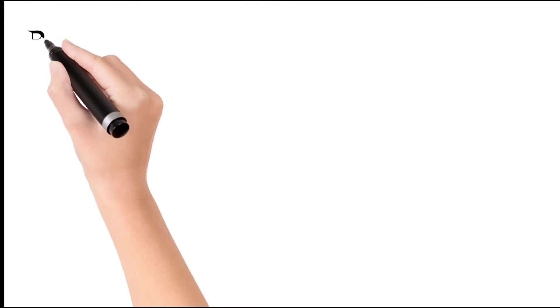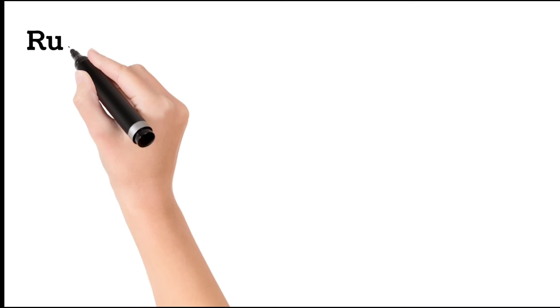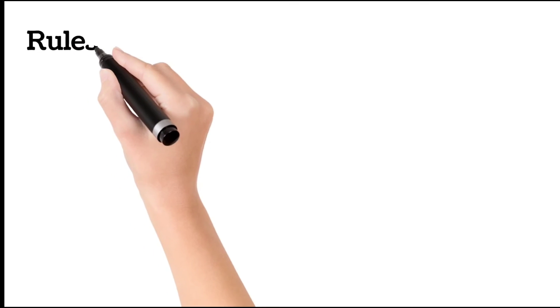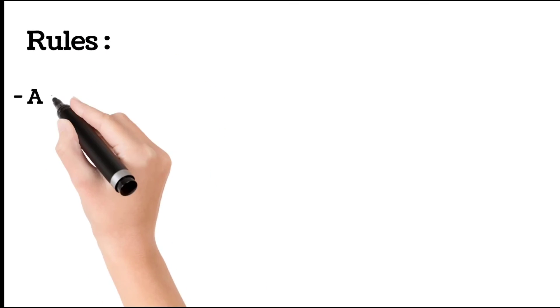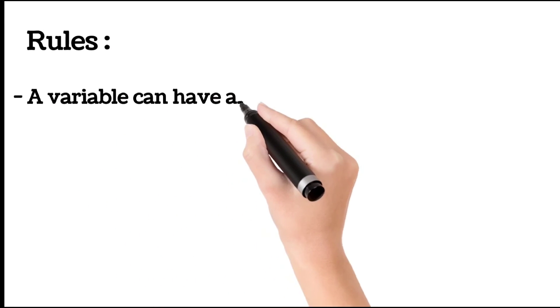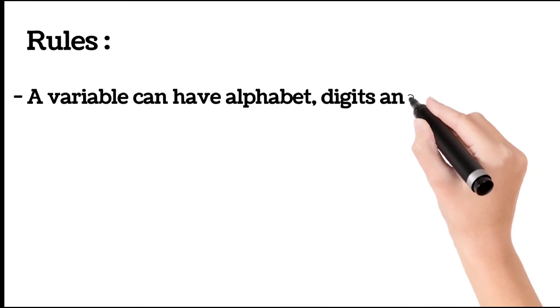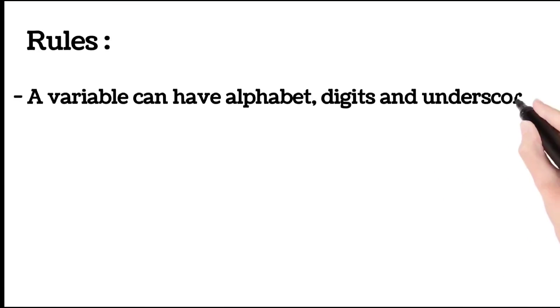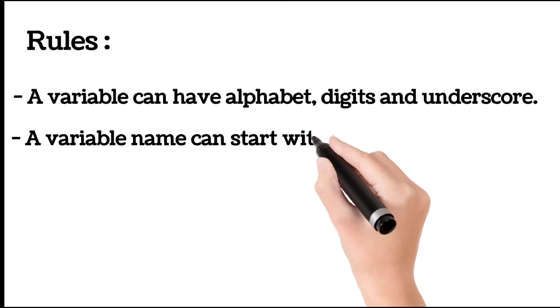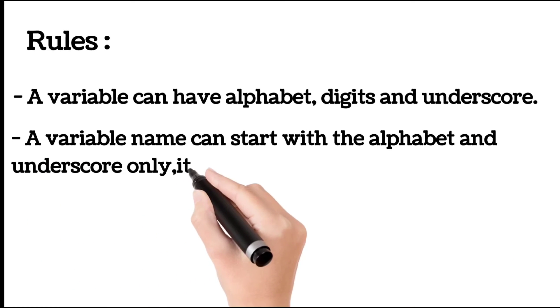Next part is rules of variable. We have to follow these rules when we declare and initialize. First is a variable can have alphabets, digits and underscore. Second rule: a variable's name can start with the alphabet and underscore only, and it cannot start with digits.